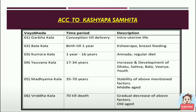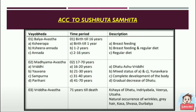Moving to the classification based on Shushruta Samhita, he classified the time period into 3 parts. First, from birth to 16 years is called Balavastha, which is further sub-classified into 3 parts: birth to 1 year is Shirapa (breastfeeding); 1 to 2 years is Shiraannada (breastfeeding and regular diet combined); and from 2 to 16 years is Annada, where only regular diet is followed.